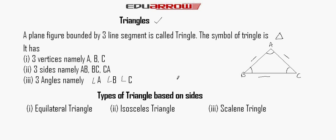Types of triangle based on its sides. First, the equilateral triangle. A triangle whose every side is equal in length is called the equilateral triangle. Suppose the length of one side is A, so every side length is A.